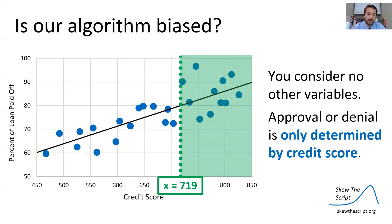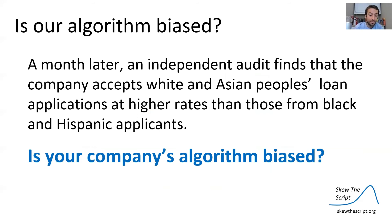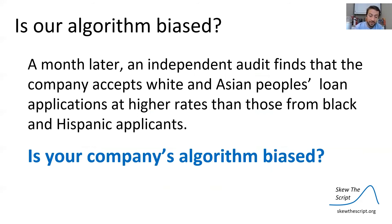Imagine your company adopting this policy: all applicants with credit scores above the threshold of 719 are automatically approved, whereas all below are automatically denied. Approval or denial is only determined by credit score. However, a month later, an independent audit finds that the company accepts white and Asian people's loan applications at higher rates than those from black and Hispanic applicants. Is your company's algorithm biased?